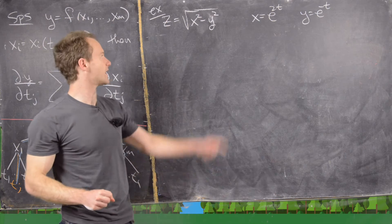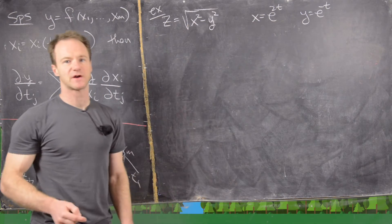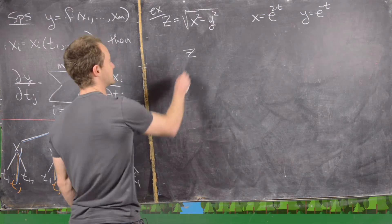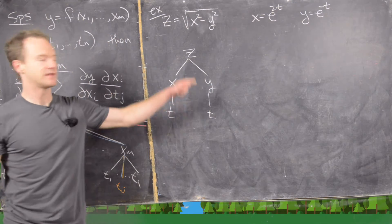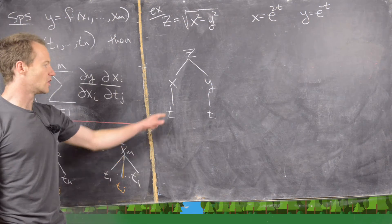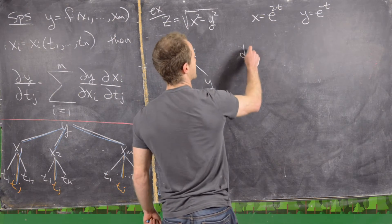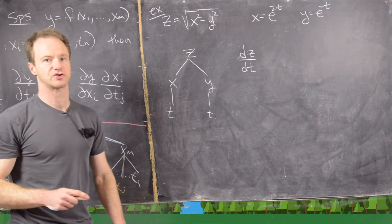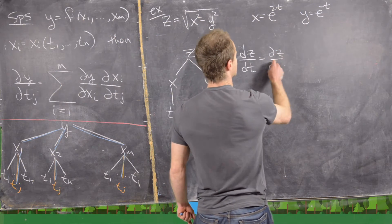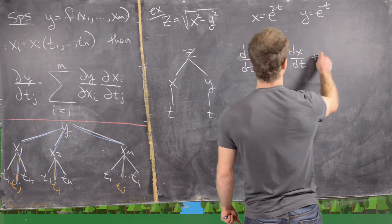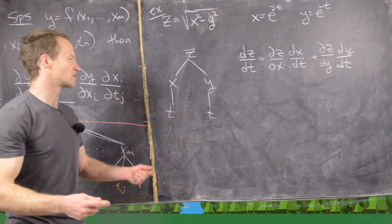For our first example, we have z as a function of two variables x and y: z equals the square root of x squared minus y squared. And x and y are each functions of a single variable t. Our tree diagram has z depending on x and y, and x and y each depending on t. Since there's only one variable at the bottom, the derivative of z with respect to t is no longer a partial derivative. It equals the partial of z with respect to x times dx/dt plus the partial of z with respect to y times dy/dt.